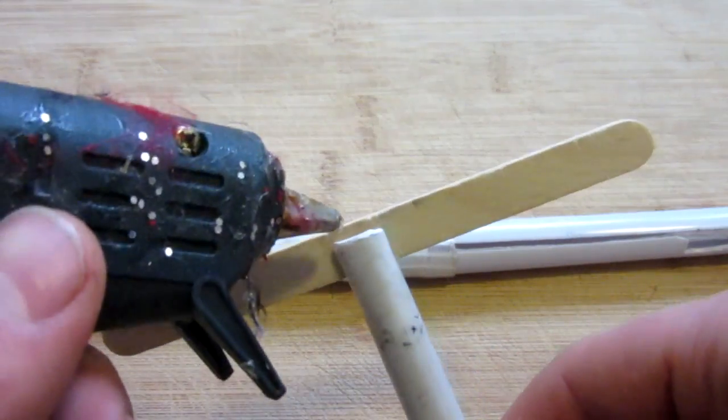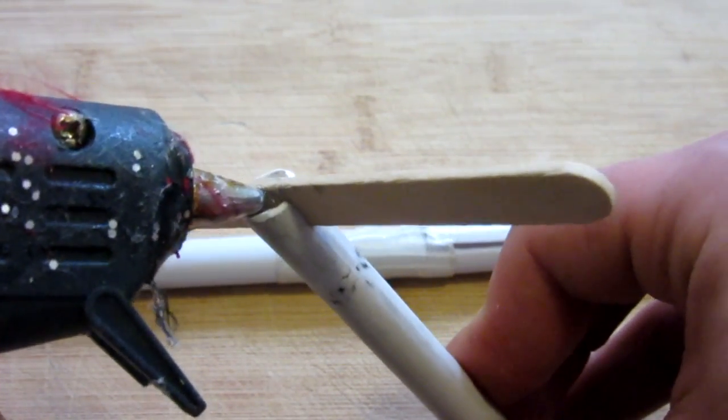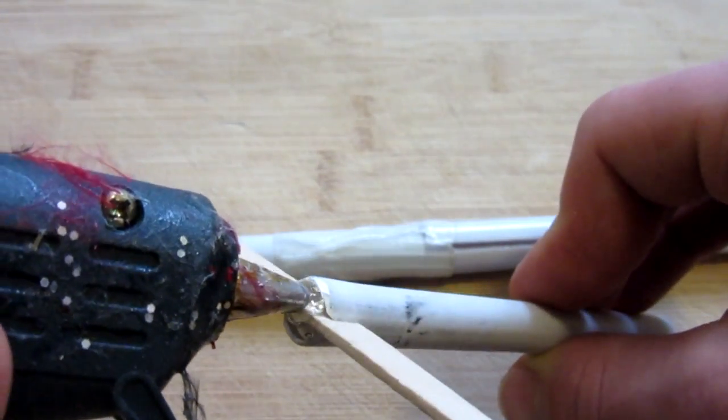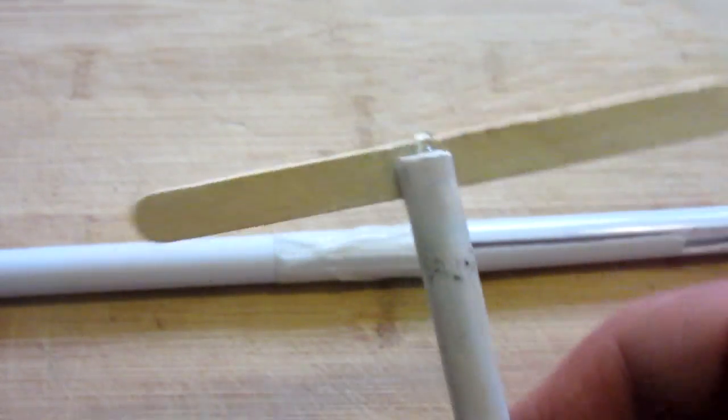And then we're just going to go ahead and take some hot glue. Don't put it on the outside, or else it will interfere with the friction. We're just going to place them just like that, and like that. Go ahead and wait for that to dry, and we'll put it inside the gun.